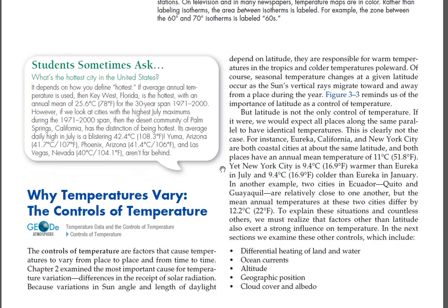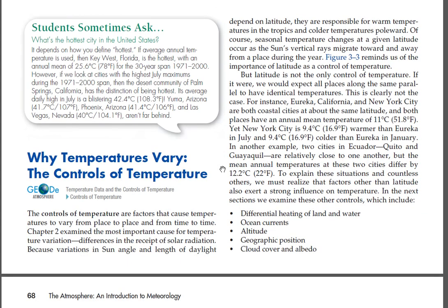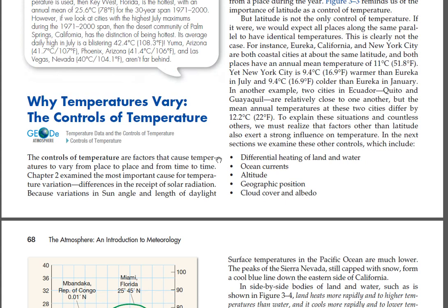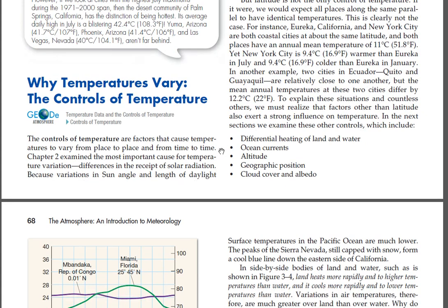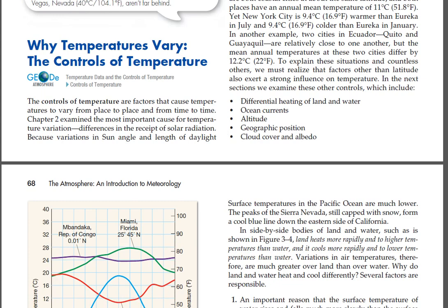In another example, two cities in Ecuador — Quito and Guayaquil — are relatively close to one another, but the mean annual temperatures differ by 12.2°C (22°F). To explain these situations, we must realize that factors other than latitude also exert a strong influence on temperature. In the next sections we examine these other controls, which include: differential heating of land and water, ocean currents, altitude, geographic position, and cloud cover and albedo.